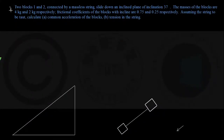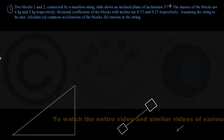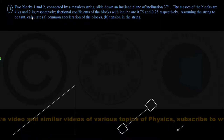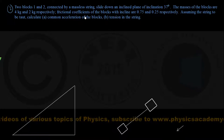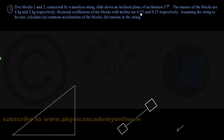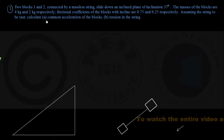Two blocks 1 and 2, connected by a massless string, slide down an inclined plane of inclination 37 degrees with the horizontal. The masses of the blocks are 4 kg and 2 kg respectively. The frictional coefficients of the blocks with the incline are 0.75 and 0.25 respectively — these are coefficients of kinetic friction since the blocks are in sliding motion. Assuming the string to be taut, calculate the common acceleration of the blocks and the tension in the string.